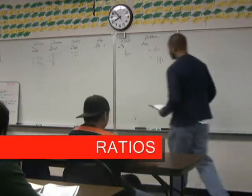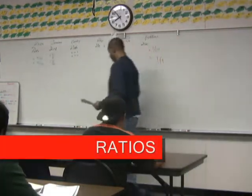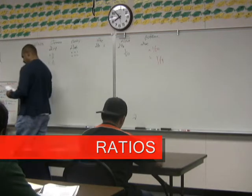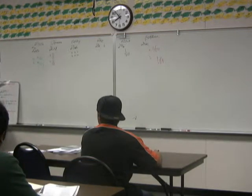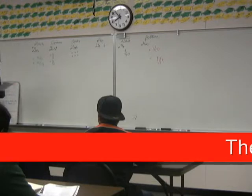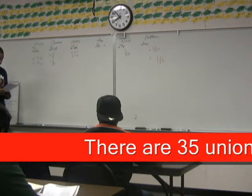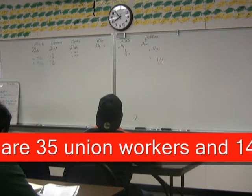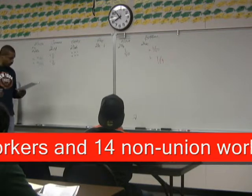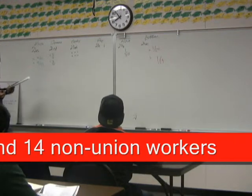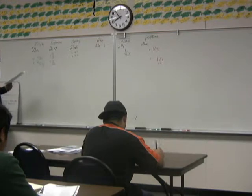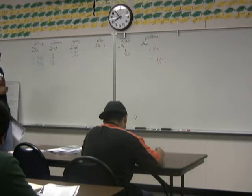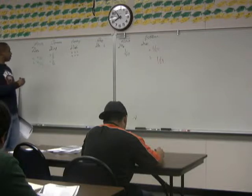Let's look at 22A and B. In a factory, there are 35 union workers and 14 nonunion workers. 22A asks: what is the ratio of nonunion to union? That's 14 to 35. We're going to reduce it — how are we going to reduce it? By 7.